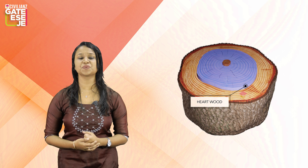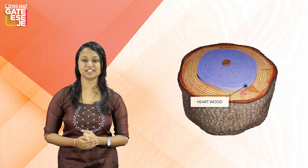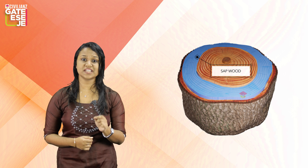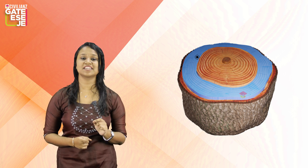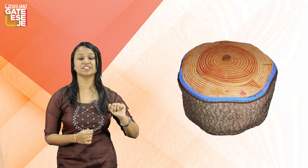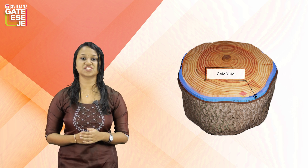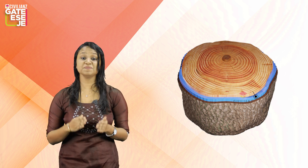The darker portion surrounding the pith is called hardwood. Hardwood is the strongest portion in a tree and is considered important in engineering aspects. The light portion surrounding the hardwood is called sapwood. Sapwood is very lightweight and has less density, and therefore it has less importance in engineering.